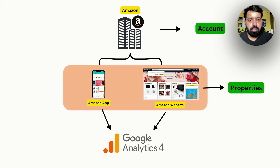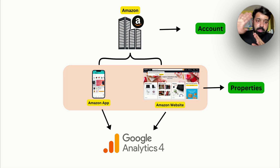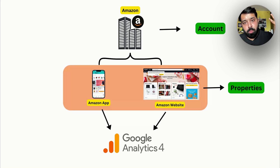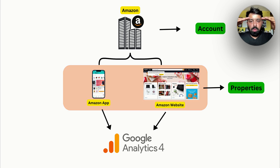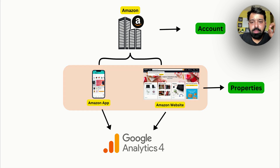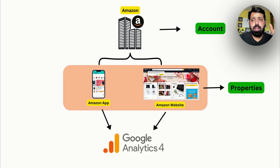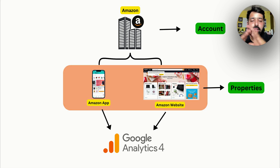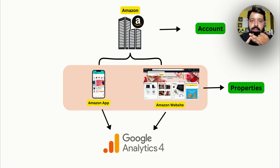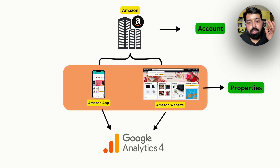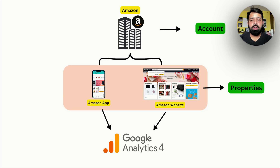You will be able to track the same thing. If you have to measure the app and separate analytics, you will be able to separate three websites. In GA4, you will be able to simplify under the same account. There will be Yes Properties. There are three apps, but they should be related to your business. If you have three websites, there will be three properties.